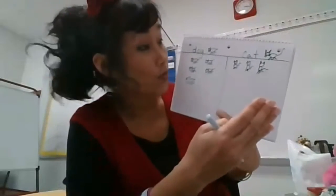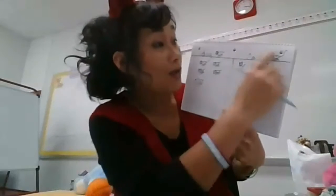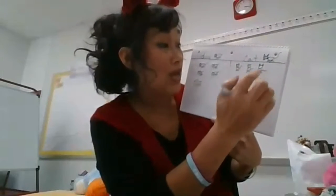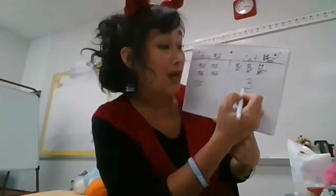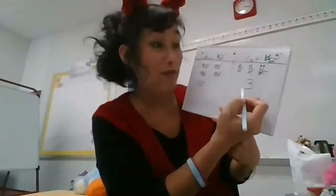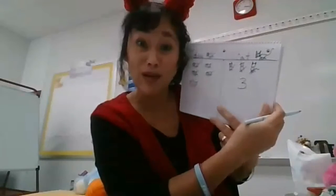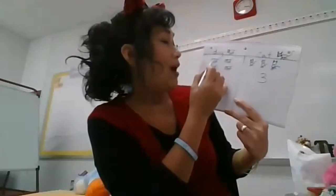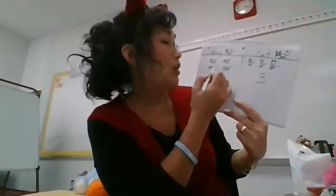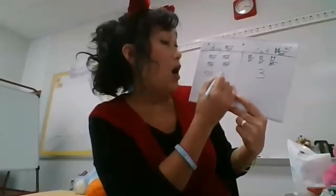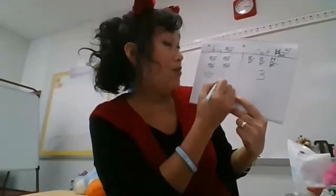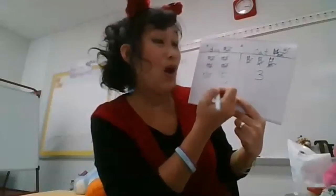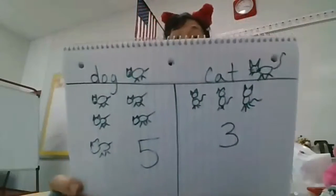After I asked everybody, this is called my data — I collected data. You can ask your mom and dad to help you count how many people like cat: one, two, three. You can write the number three, or ask mom and dad to help you, because we haven't learned the number three yet. And then count how many dog: one, two, three, four, five.